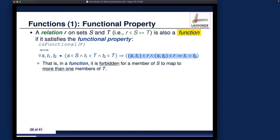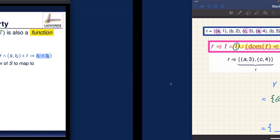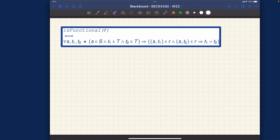This formal definition is saying it is forbidden for a member of S to map to more than one member of T. If t1 and t2 are both mapped by s, then the only possibility is t1 equals t2 — just one member. However, we can interpret this functional property slightly differently but equivalently.